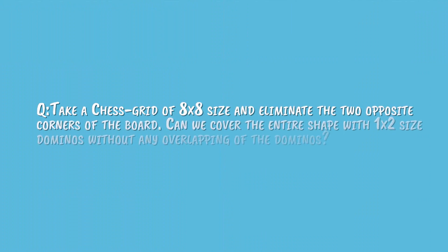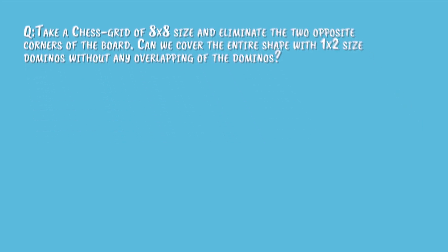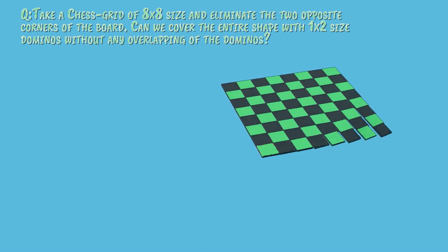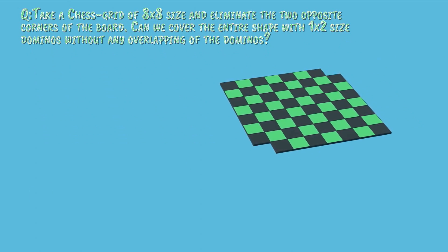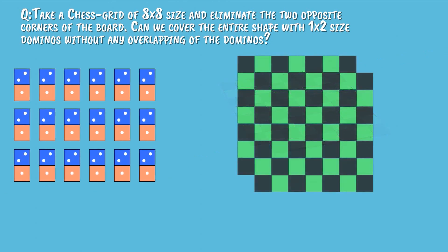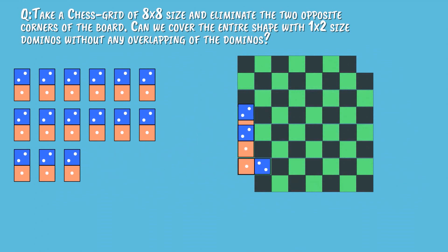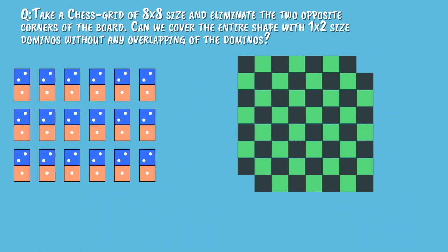Take a chess grid of 8×8 size and eliminate the two opposite corners of the board. Can we cover the entire shape with 1×2 size dominoes without any overlapping? The question is easy to understand: we have a chess grid of 8×8 with two opposite corners removed. We have dominoes of 1×2 size, and we can place them on the board either horizontally or vertically, anywhere on the board, but they should not overlap with an existing domino.